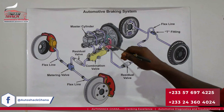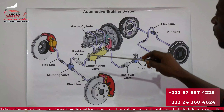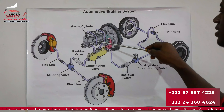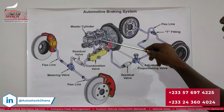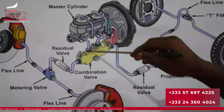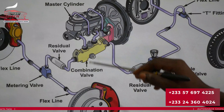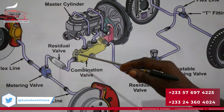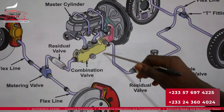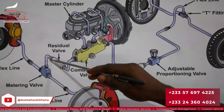Brake fluid is held at the top in the reservoir. The primary and secondary pistons push against the spring mechanism to amplify the brake fluid pressure. The brake fluid then flows through two lines and enters the combination valve, where it is evenly distributed to both the front and the rear.